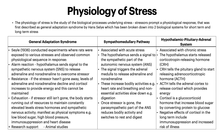So you have alarm reactions: the hypothalamus sends a signal to the sympathetic nervous system (SNS) to release adrenaline and noradrenaline to overcome the stressor. Then we have resistance: if the stressor hasn't gone away, levels of adrenaline and noradrenaline decline and cortisol increases to provide energy. But this cannot be maintained because your body can only survive so long on cortisol. Then you have exhaustion: if the stressor still isn't gone, the body starts running out of resources to maintain constantly elevated levels of stress hormones and sympathetic nervous activity. This can manifest as physical symptoms such as low blood sugar, high blood pressure, immunosuppression and heart disease.